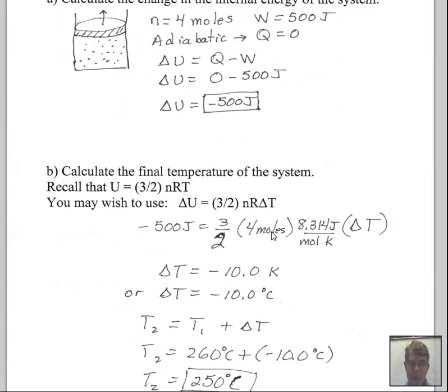What will happen to the temperature as this system is expanding adiabatically? Well, we know that we can calculate the internal energy with three halves NRT for an ideal gas. We're using an ideal gas here. So internal energy, three halves NRT. If we have the change of internal energy that's desired, that's accomplished by a change in the temperature.